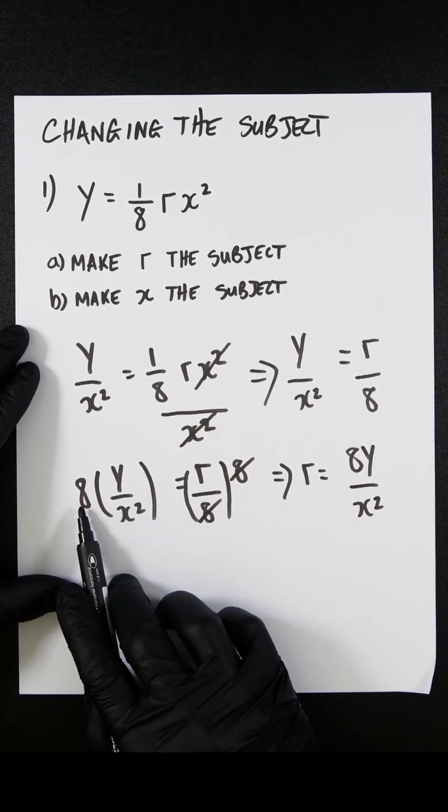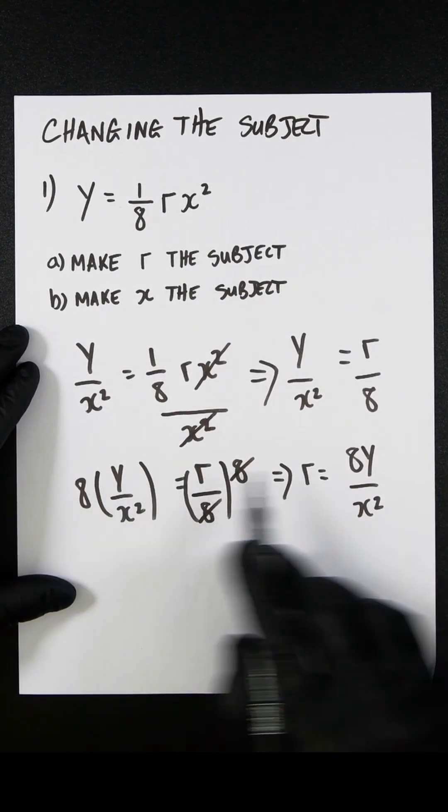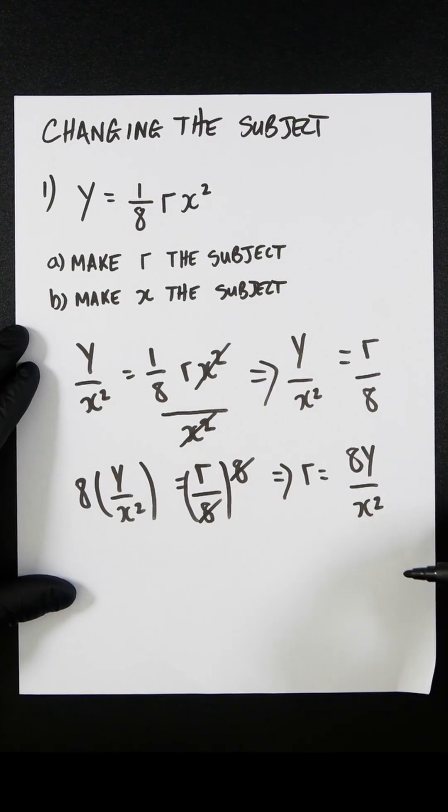and you will now be left with r equals 8y over x squared. Because there's brackets, I've just multiplied 8 to everything in the brackets, so 8 times y is just 8y. That is the answer for this.